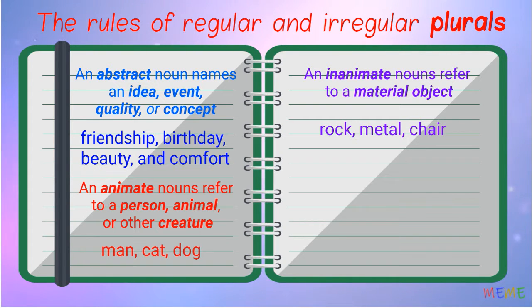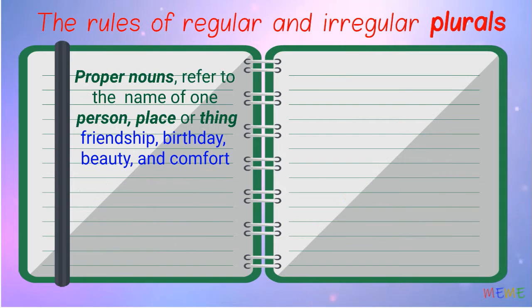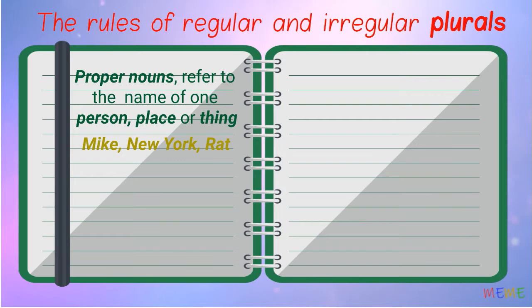A common noun is the name of a group of similar things. 4. For example: phone, iPad, laptop. Proper nouns refer to the name of one specific person, place, or thing. For example: Mike, New York, iPad.